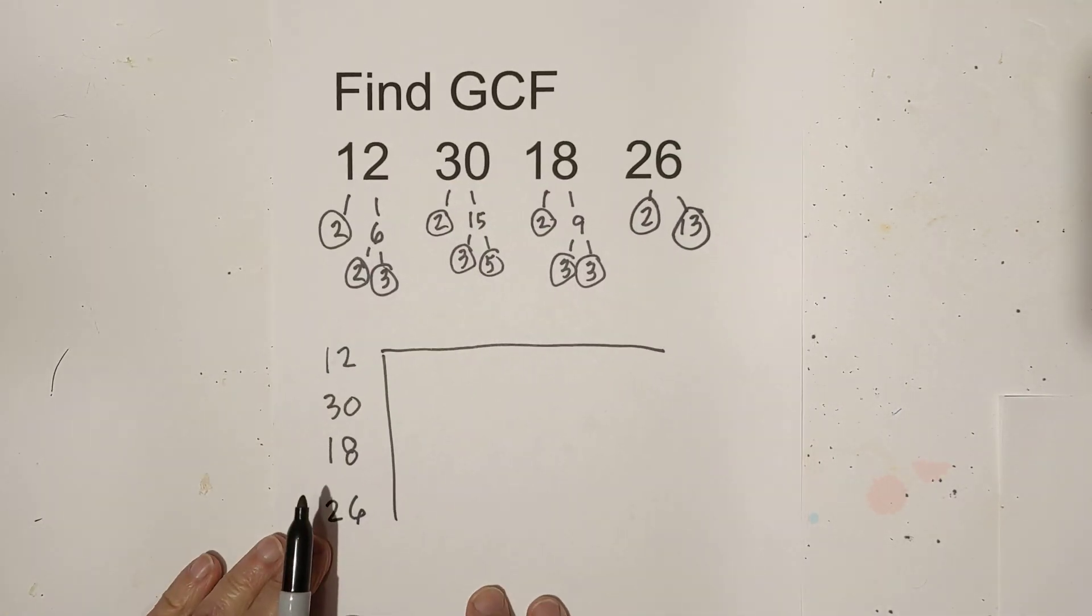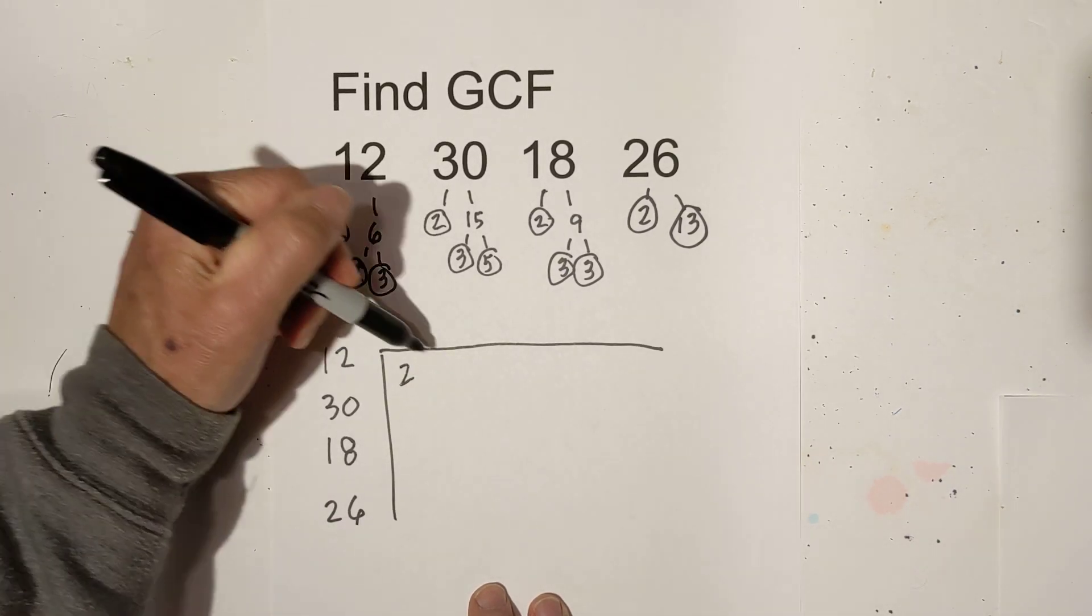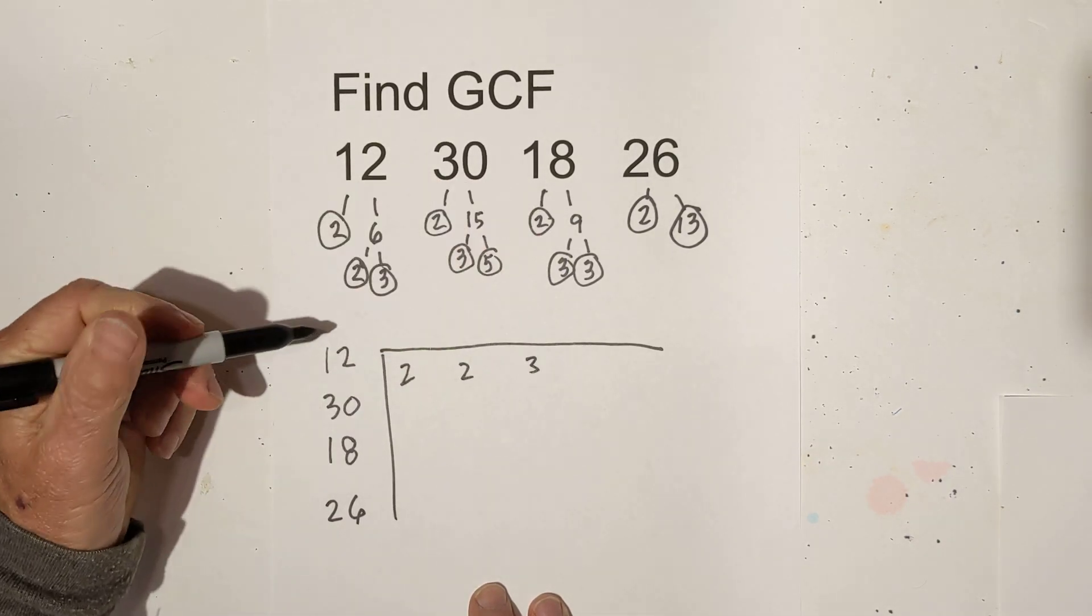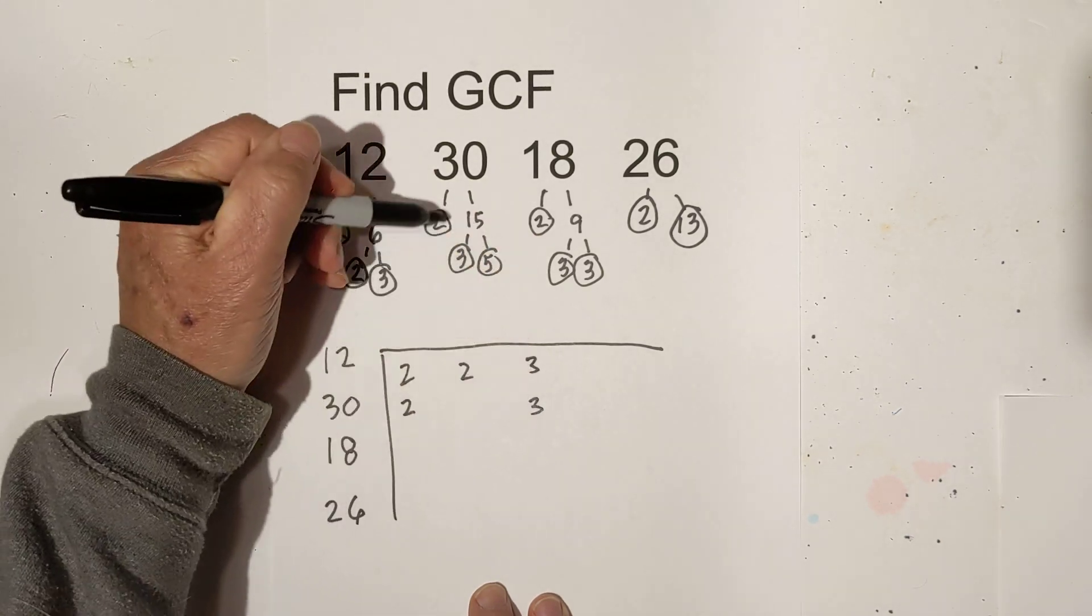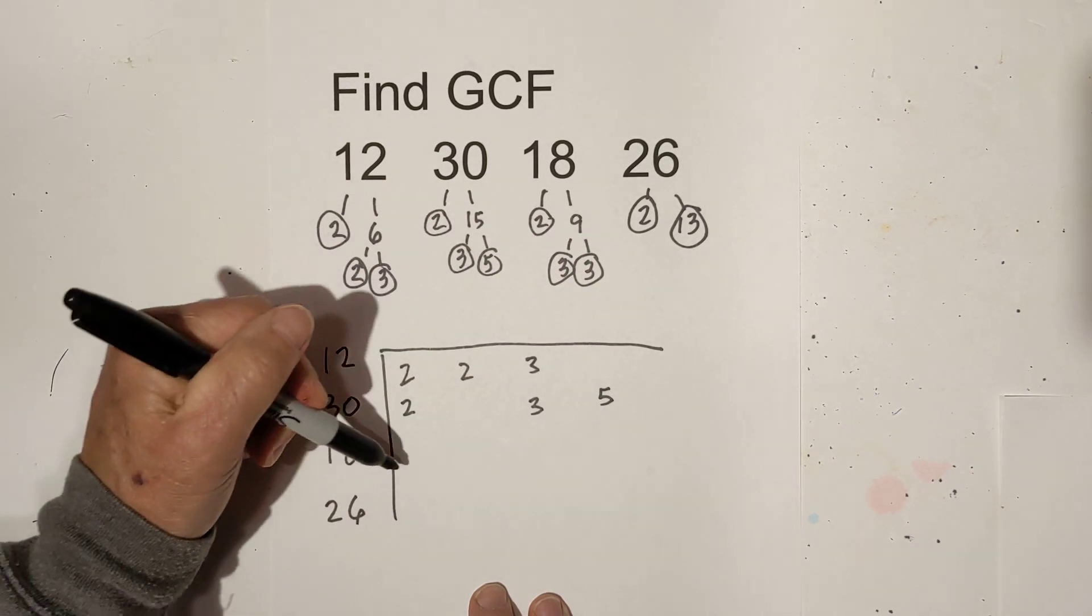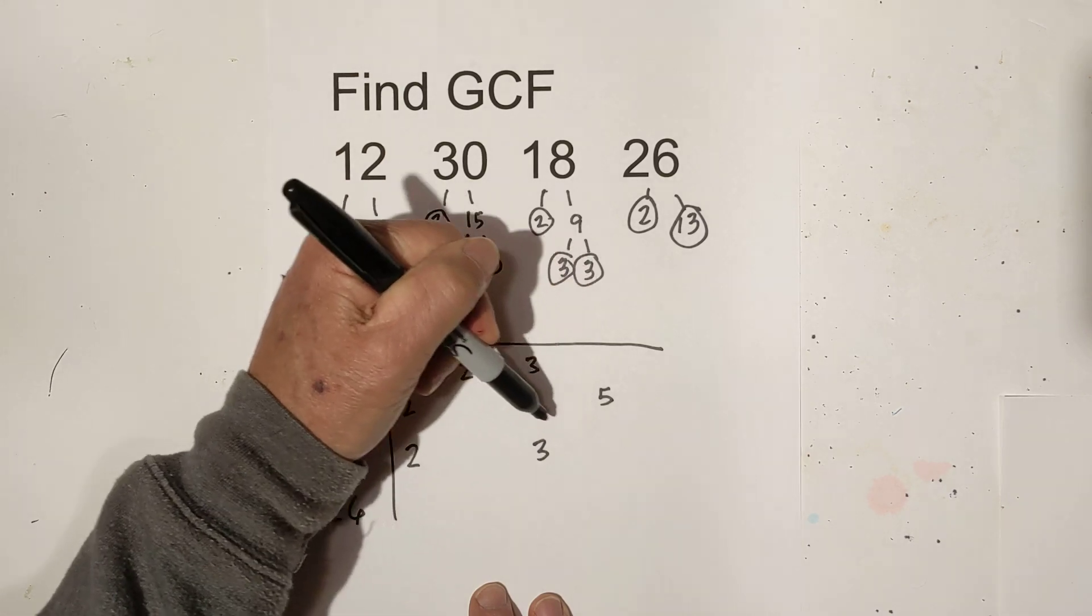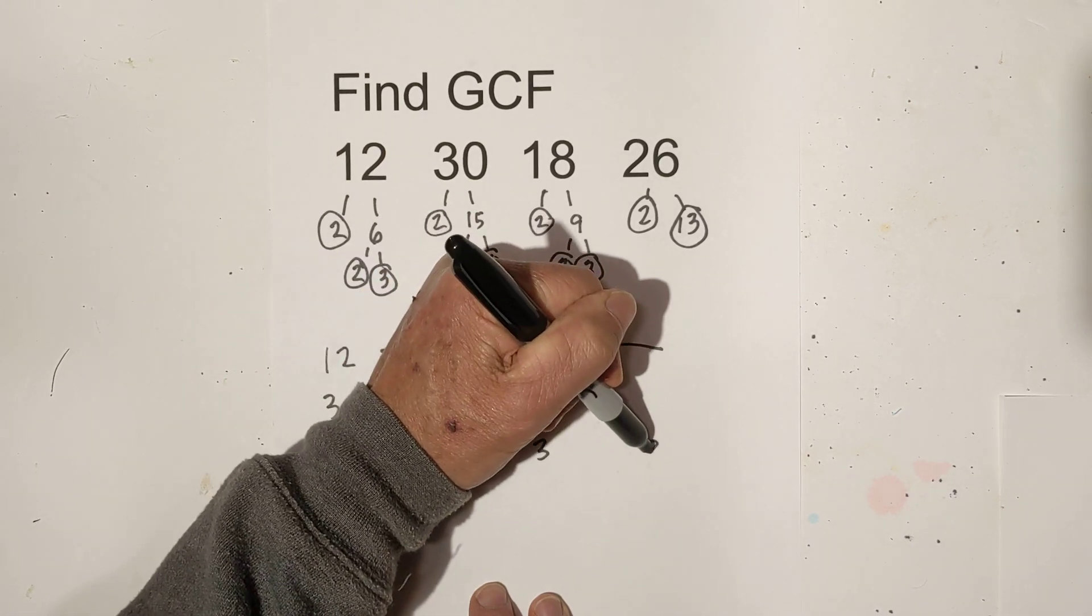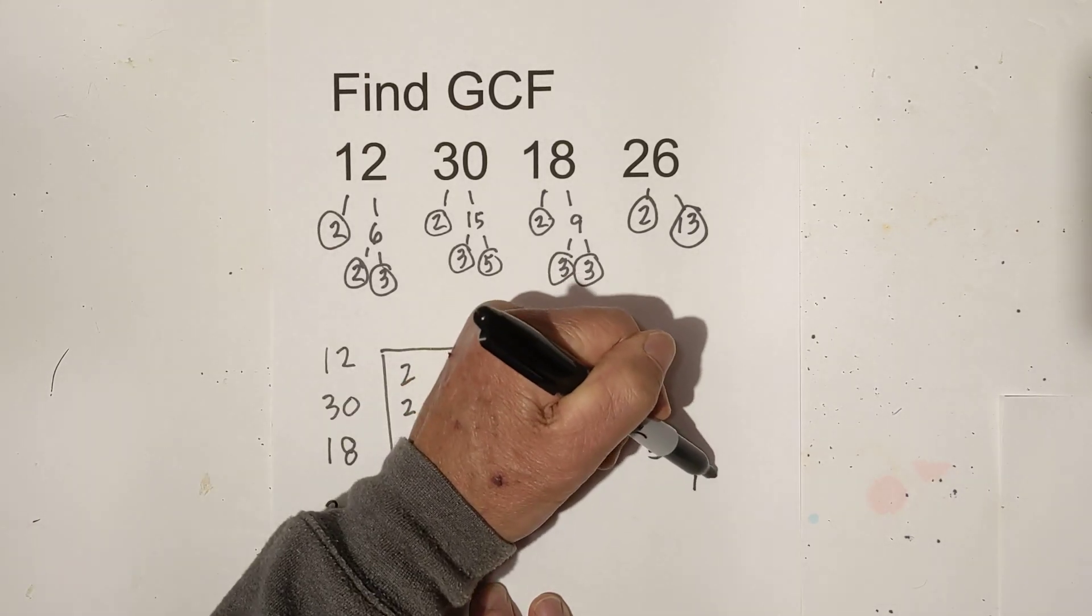Now let's go ahead just like we did before. I'm going to write the numbers in. We've got a 2, 2, and 3. And I've got a 2 here, I've got a 3 here, and I've got a 5. Next we have a 2 and a 3 and a 3. But I don't have another column for a 3, so I'll write this here. And then I've got a 2 and a 13.